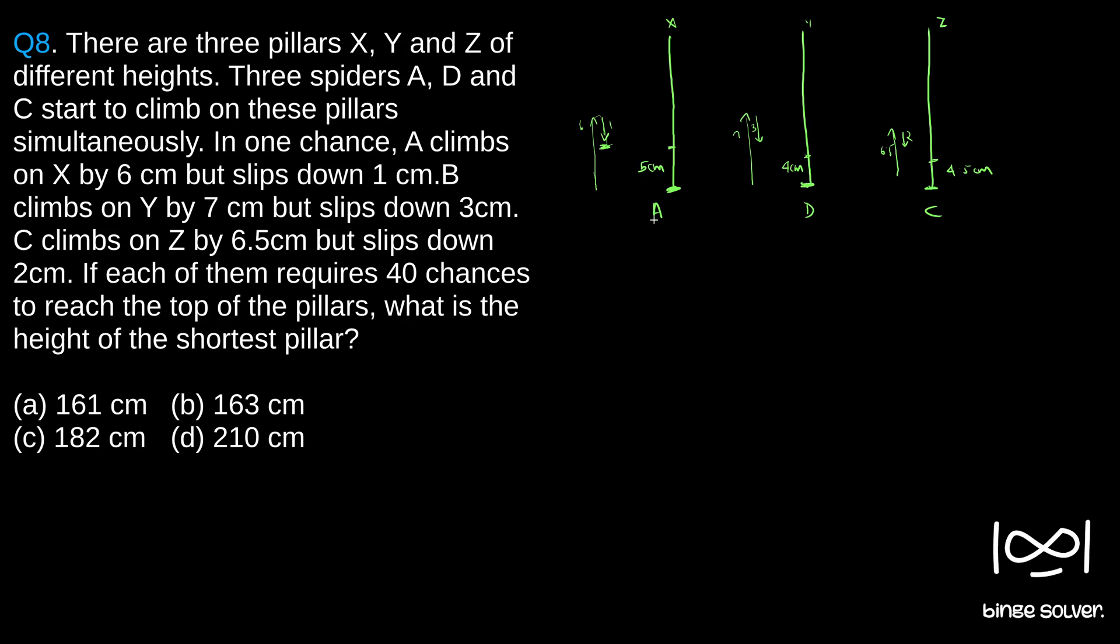Since all the spiders take 40 steps to reach the top, we can clearly say that the smallest effective distance - the spider which takes the smallest effective distance will probably be climbing the shortest pillar.